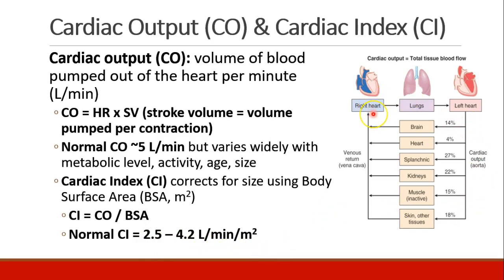This figure here shows how the right heart sends 100% of its cardiac output to the lungs, which returns it to the left heart, but the left heart sends cardiac output to a variety of different organs. Large percentages go to the kidneys and to the splanchnic circulation, while relatively smaller amounts go to the heart. We'll talk more about distribution of cardiac output later on.